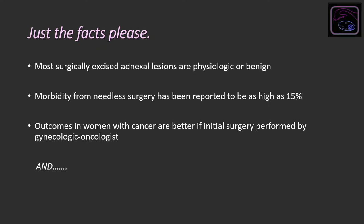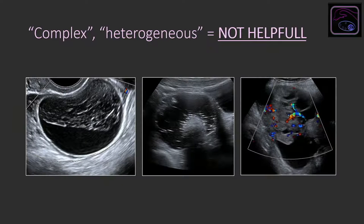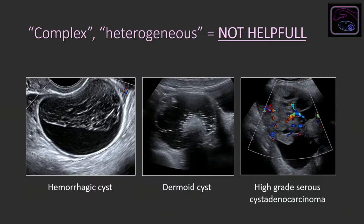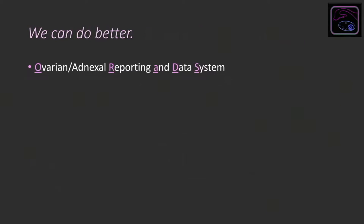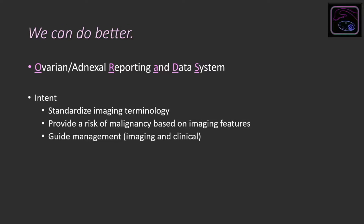We love terms like 'complex' and 'heterogeneous' — everything that isn't simple gets that label, and those terms can describe three different lesions with very different outcomes: some will go away, some don't need to come out, and others are very malignant. We can and should do better with ORADS. Like all RADS systems, the intent is to standardize terminology, provide a risk of malignancy helpful to patients and providers, and give management guidelines.